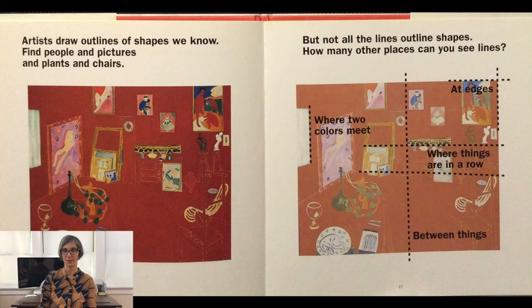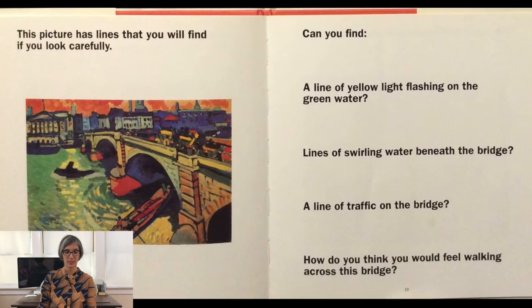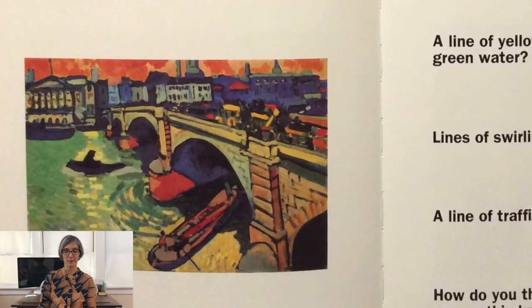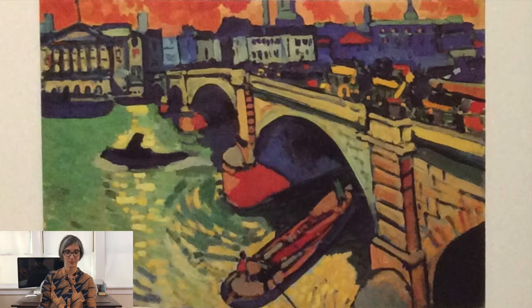How about where two colors meet? Can you see lines there? Or where things are in a row? This picture has lines that you will find if you look carefully. Can you find a line of yellow light flashing on the green water? If you need more time, go ahead and pause the video. Can you find lines of swirling water beneath the bridge? Can you find a line of traffic on the bridge?